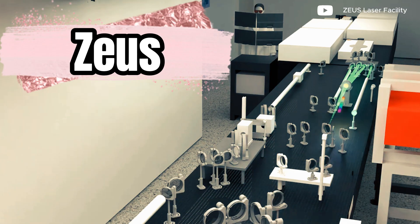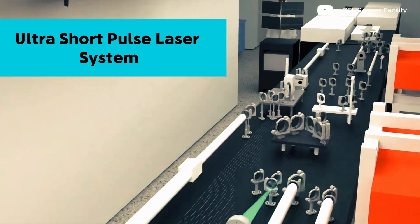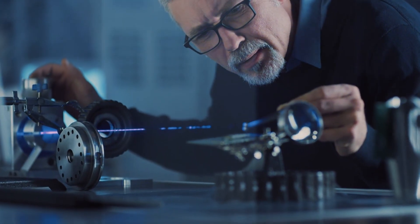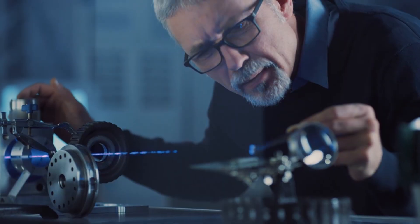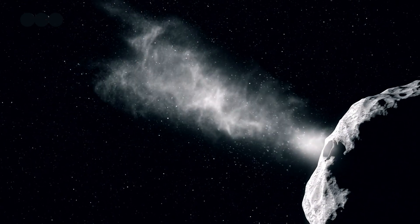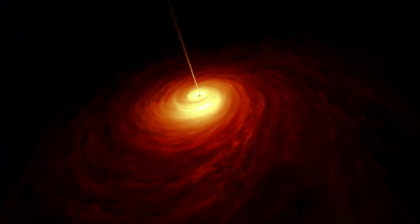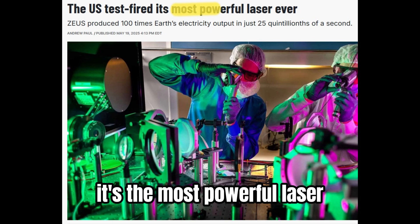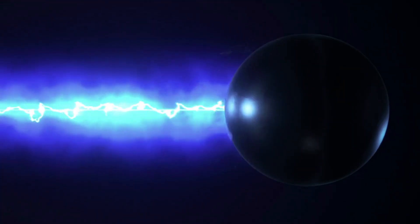It's called ZEUS, short for Zetawatt Equivalent Ultra Short Pulse Laser System. And behind this name lies one of the most ambitious scientific instruments ever built. A machine that promises to let humans recreate the power of black holes, gamma ray bursts, and supernovae inside a lab. It's the most powerful laser ever fired in the United States and one of the most powerful on Earth.